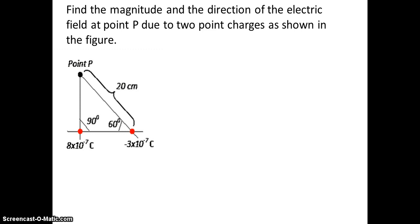In this problem we want to find the magnitude and the direction of the electric field at point P due to the two point charges shown in the figure. We have these two charges, one of them is negative, the other one doesn't say so it's positive.